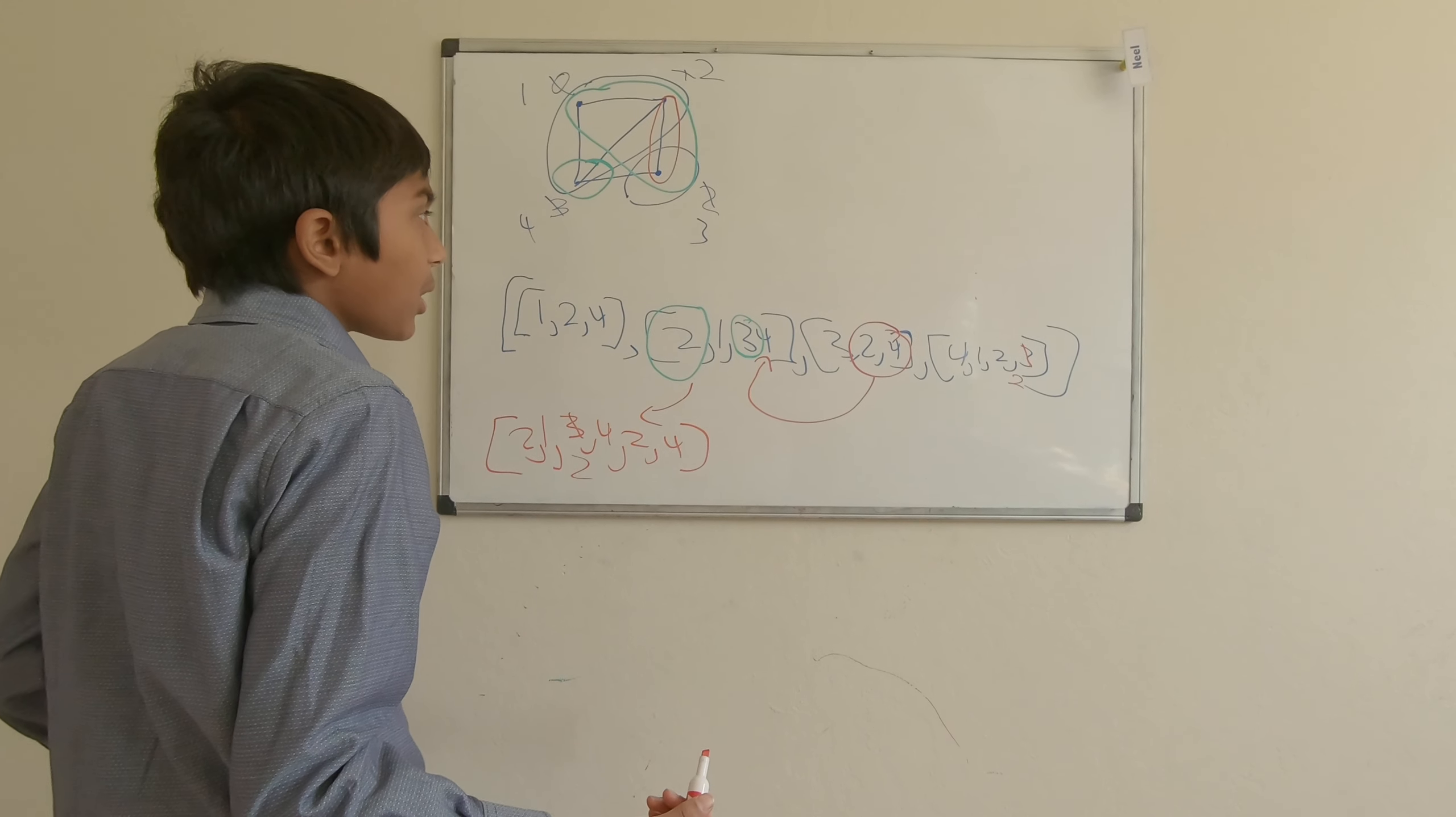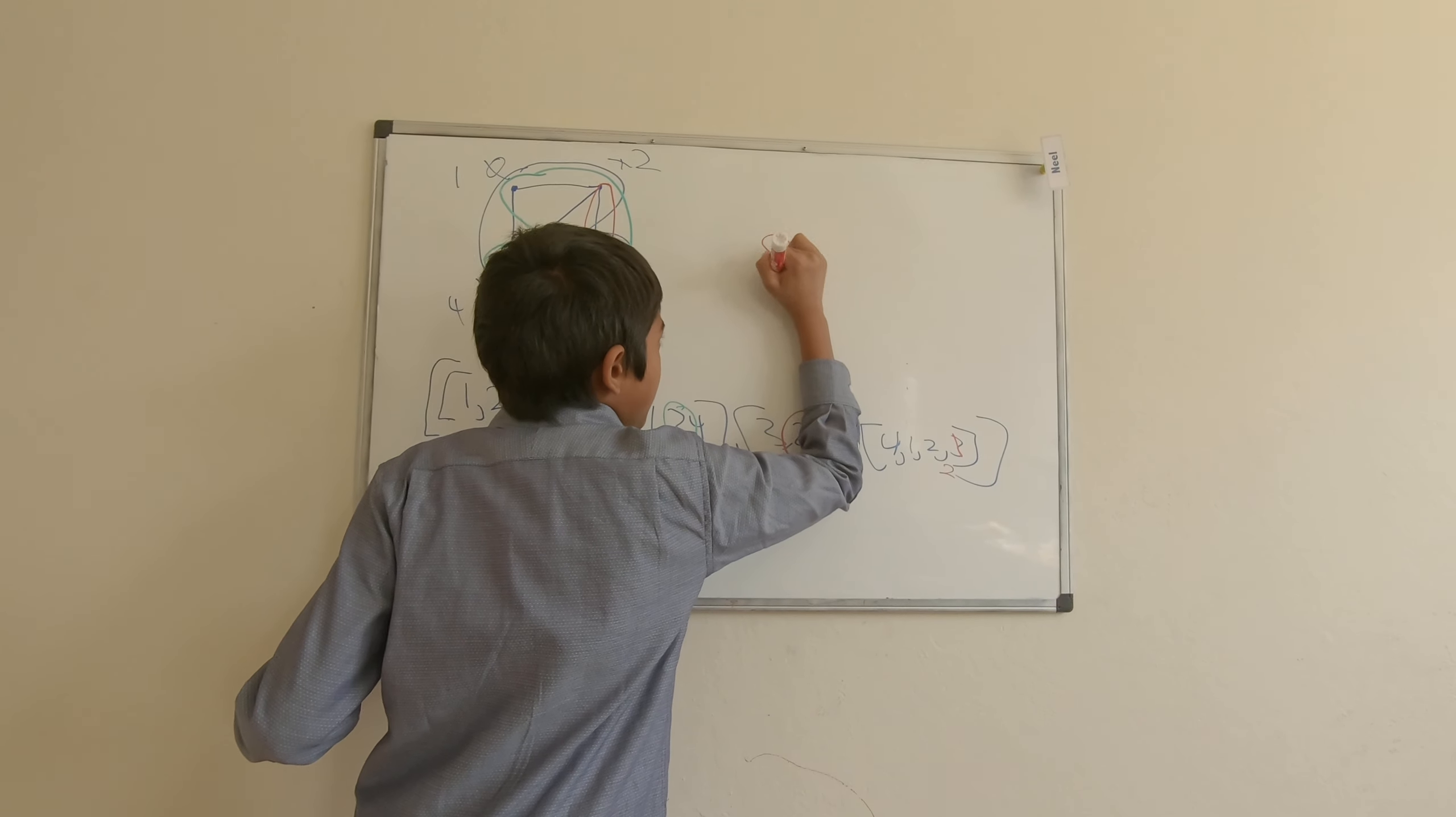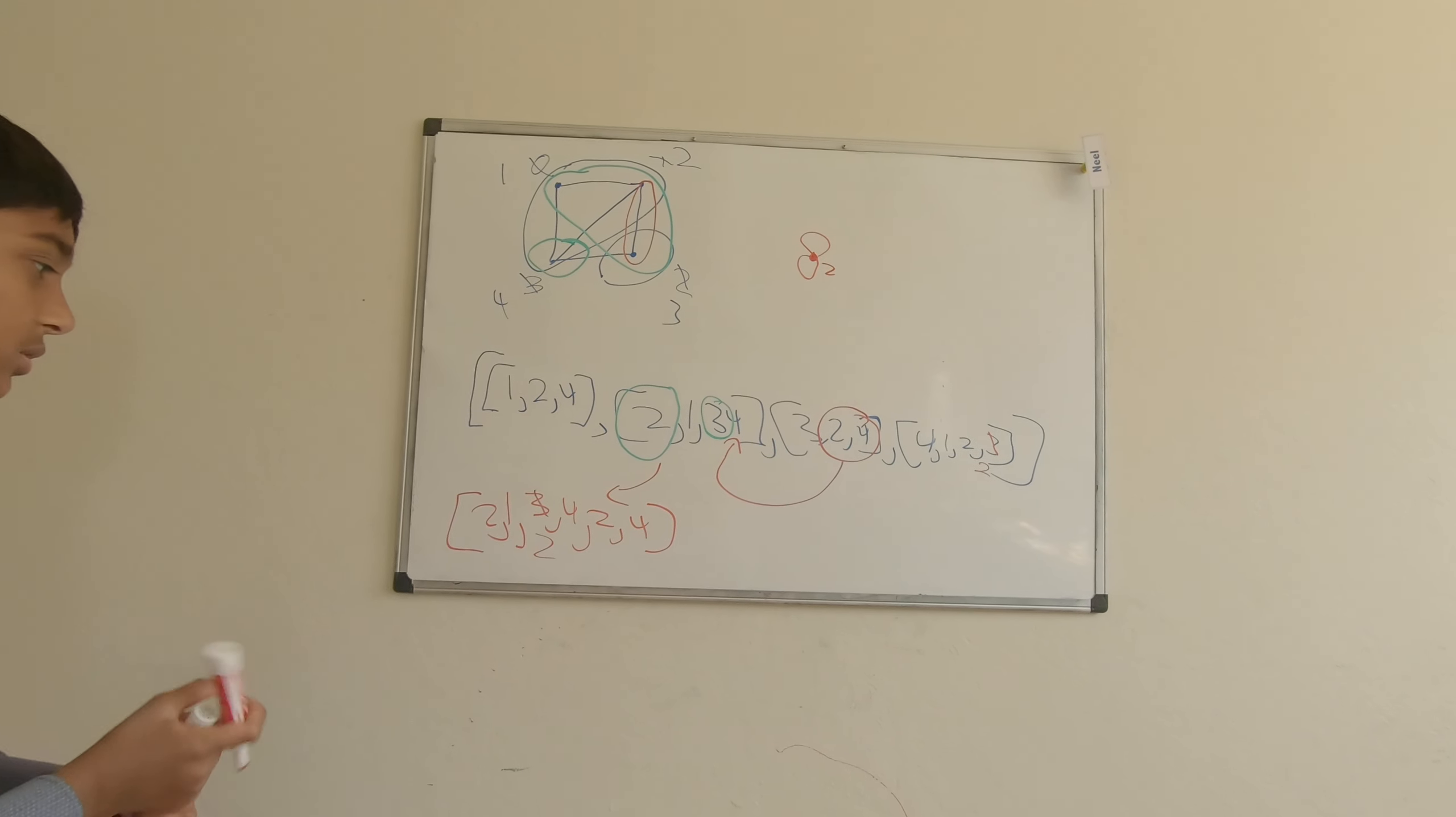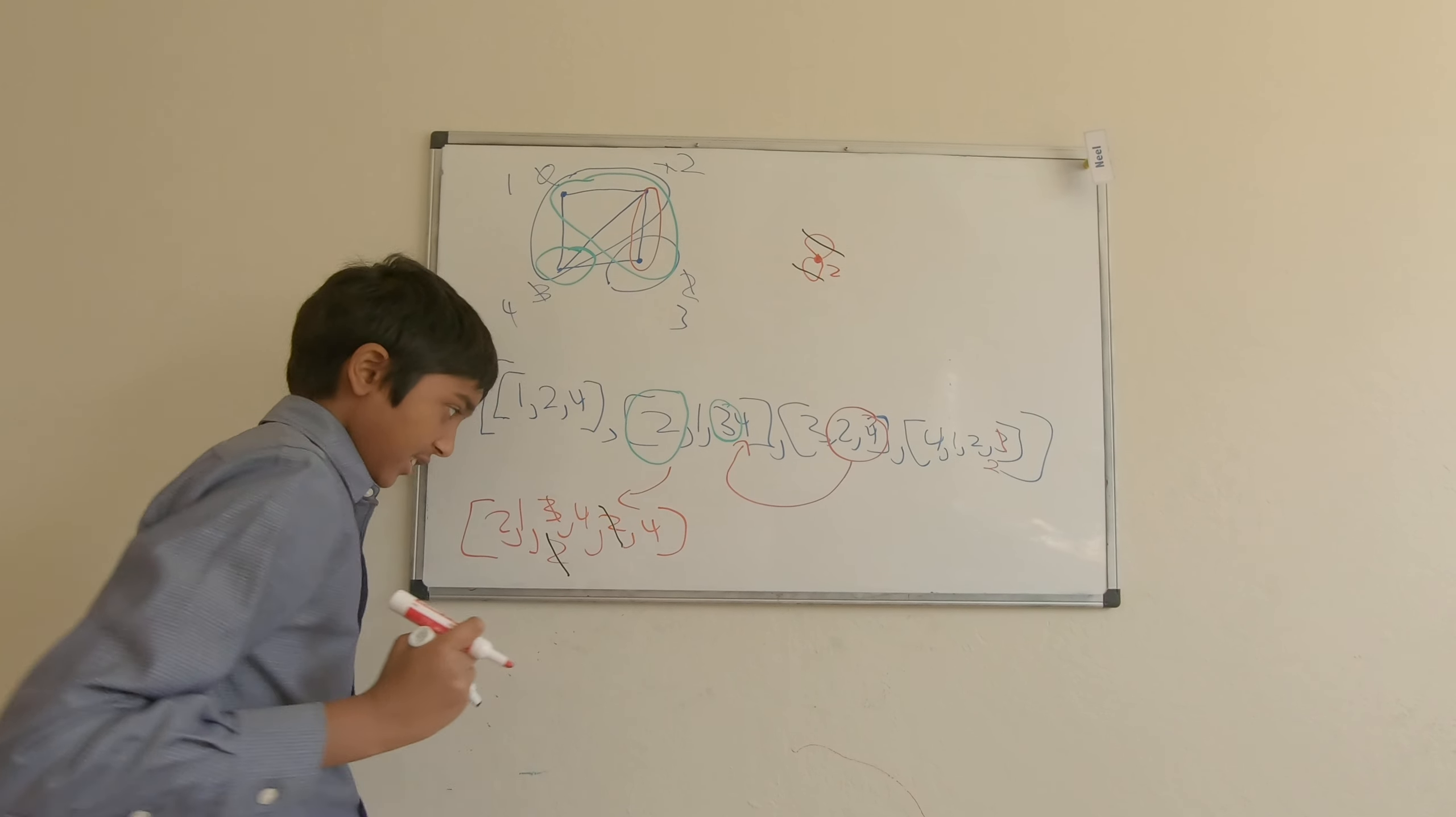But now we have a problem. Our new node over here, 2, is connected to itself twice. And self loops are completely garbage, and nobody cares about them at all. So what we're going to do is we're just going to delete them. So we're going to take this one out of the list, and we're going to take this one out of the list.